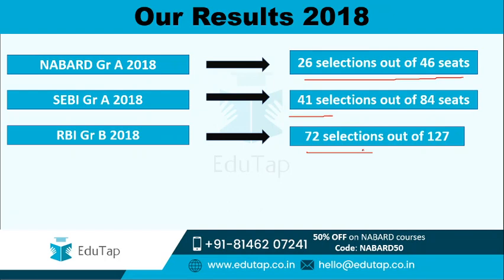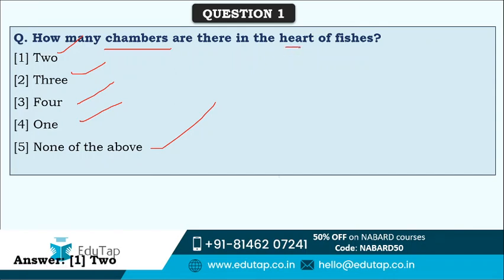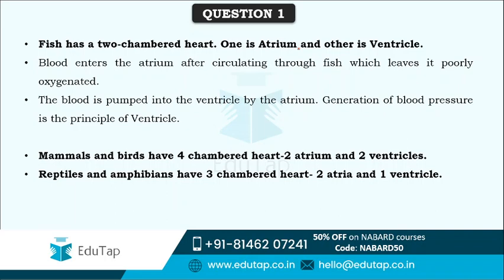Your name can also be among these selections if you prepare wisely. Let's start with today's video. First question: how many chambers are there in the heart of fishes? Options are two, three, four, one, or none of the above. The correct answer is option one - two. In the heart of fishes, two chambers are there: one is the atrium and another is the ventricle.